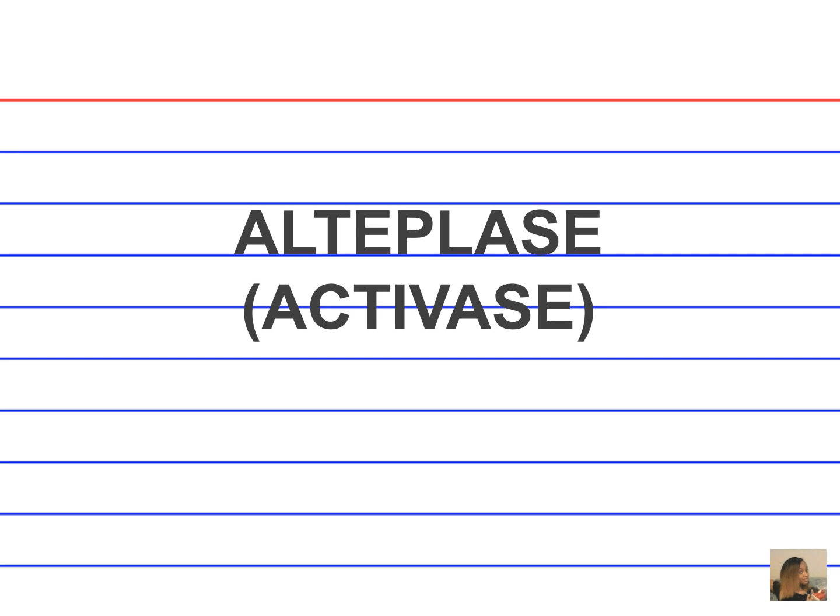Alteplase, Activase. What type of drug is alteplase? It's a thrombolytic agent. How is alteplase administered? Intravenously. What lab stats should be monitored? The PT-INR, APTT, platelets, and clotting factors should be monitored. What are the indications for administering alteplase? For severe clots, and it should be administered within 40 hours of clot formation.